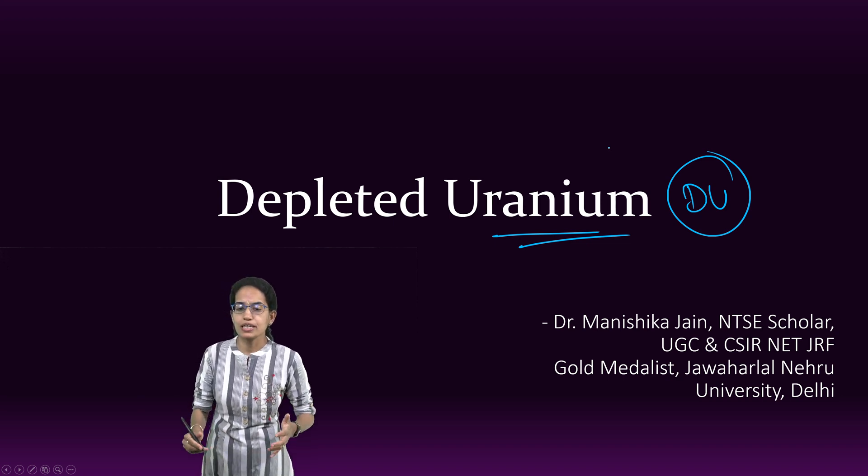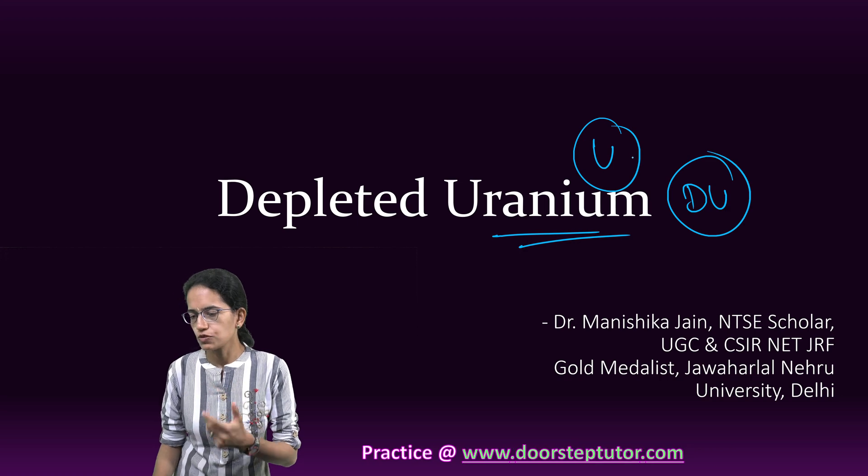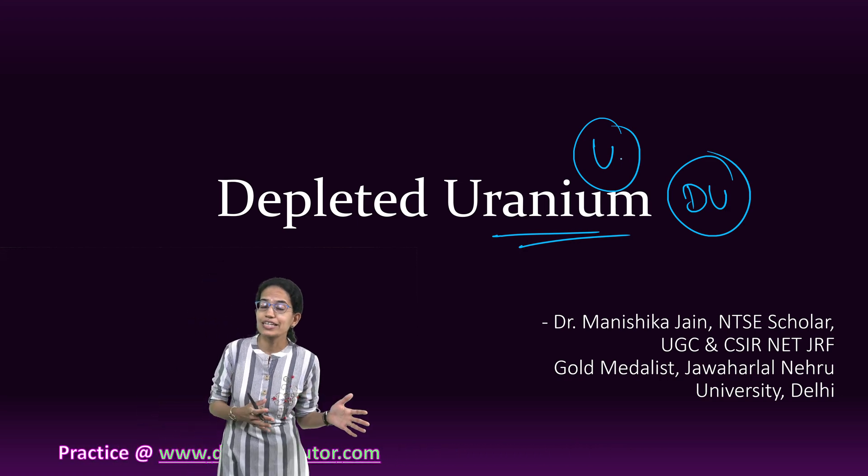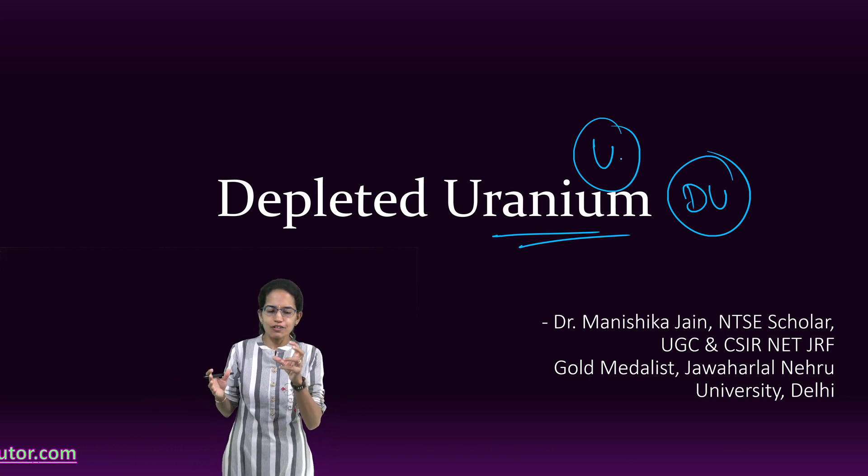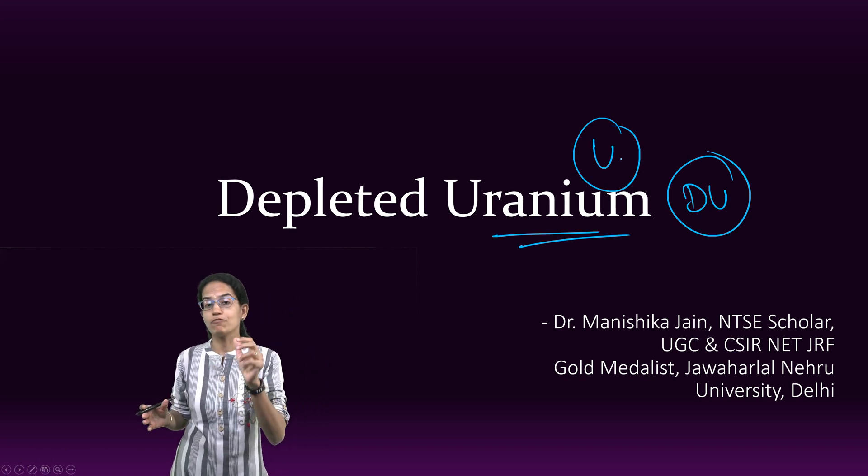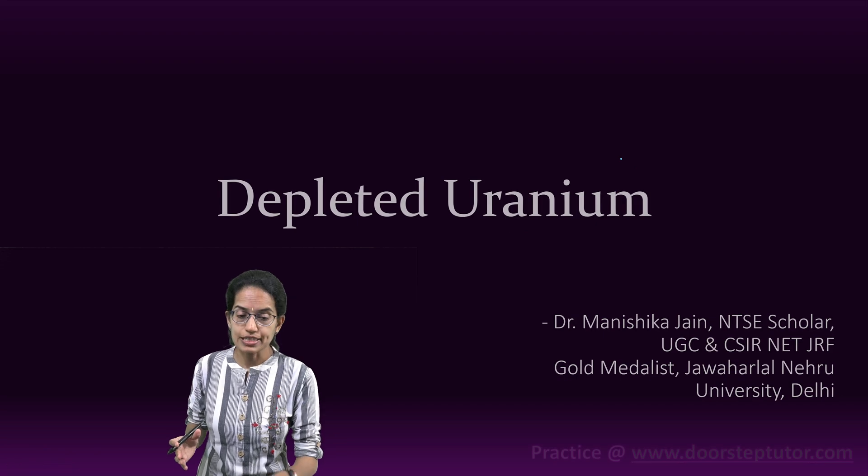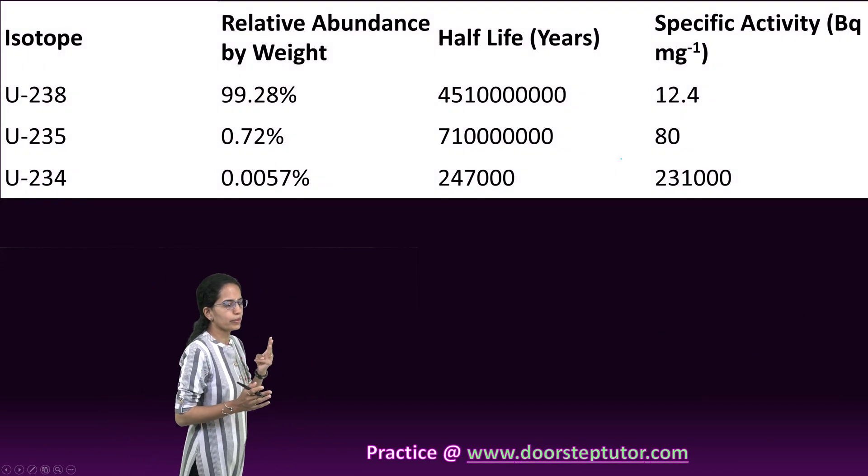Uranium, with the chemical symbol U, is a radioactive element found in silver color. It's very dense - nearly 70% more dense than lead. Even a small cube of 10 centimeters can weigh around 20 kilograms, so uranium is extremely heavy.